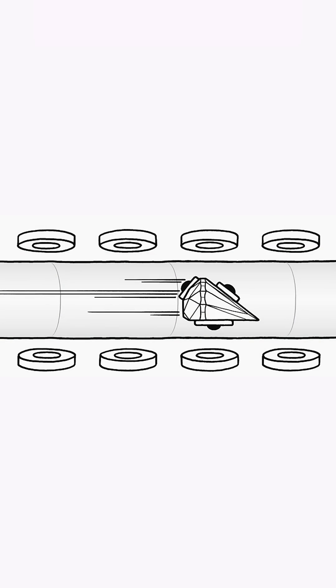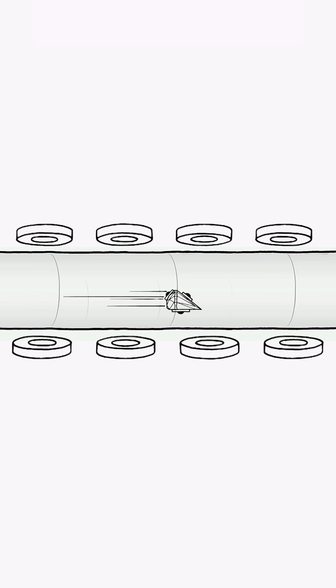To defeat friction, we could levitate the capsule with magnetic fields and make it progressively smaller and lighter to accelerate and steer it more easily. Oops, we've accidentally built a particle accelerator.